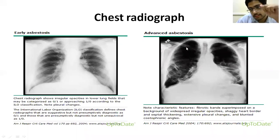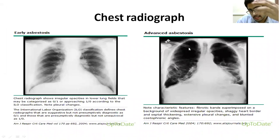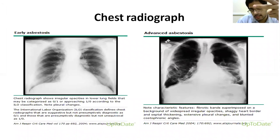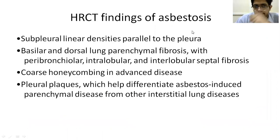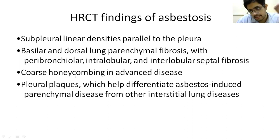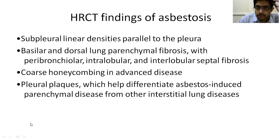When fibrotic lesions are found in the upper zones, the differential diagnosis includes berylliosis, radiation fibrosis, extrinsic allergic alveolitis, ABPA, silicosis, tuberculosis, and sarcoidosis — the mnemonic BREASTS. Lower zone predominance suggests IPF and asbestosis. On HRCT, asbestosis shows subpleural linear densities parallel to the pleura, basilar and dorsal lung parenchymal fibrosis with septal fibrosis, coarse honeycombing predominantly in the lower zones, and pleural plaques. You'll also find traction bronchiectasis and septal thickening.